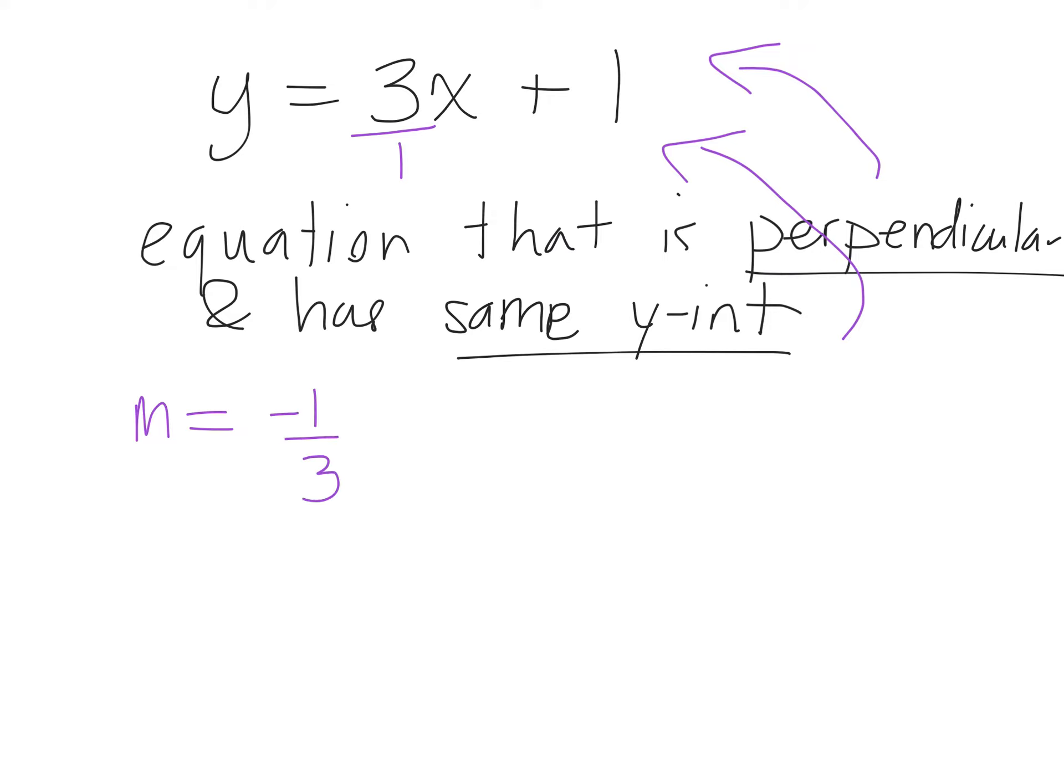Negative one over three. Raise your hand if you got that as a slope. It has the same y-intercept as this line. What's the y-intercept of that line? One. B equals one. Therefore, what's the equation of a line that is perpendicular to that and has the same y-intercept? Y equals negative one-third x plus one. That's it.